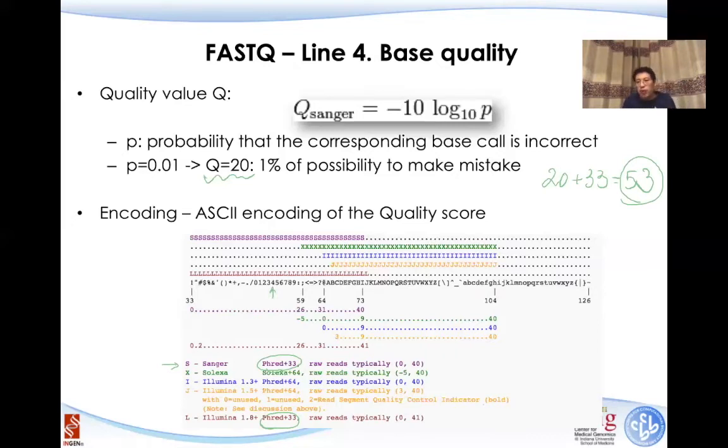Which means in the previous slide, the last line, the fourth line in that particular location, if it says 5, that means ASCII code is 53, and that means the Q value is 20. That means the probability of making a mistake is 0.01.